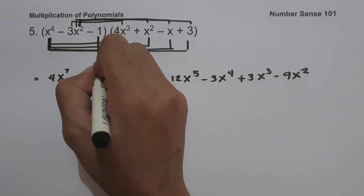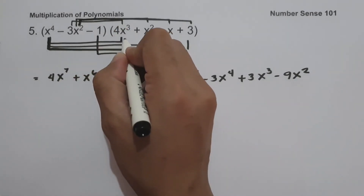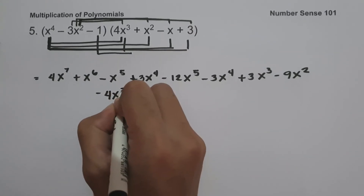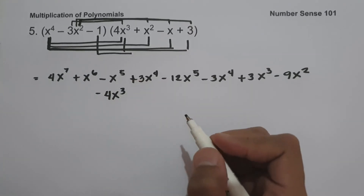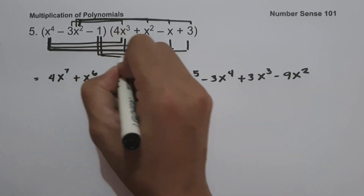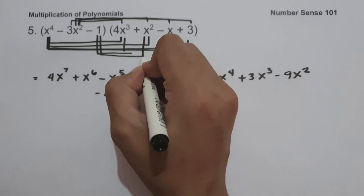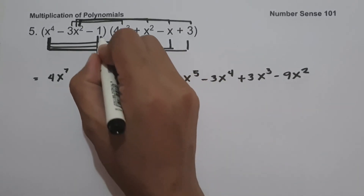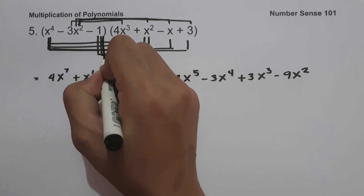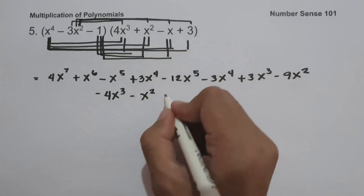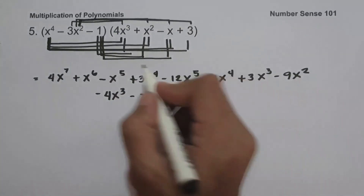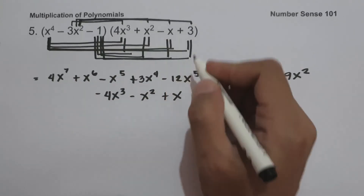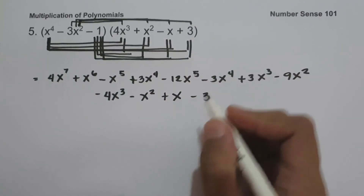Negative 1 multiplied by 4x cubed is negative 4x cubed. Negative 1 multiplied by x squared is negative x squared. Negative 1 multiplied by negative x is positive x. Negative 1 multiplied by 3 is negative 3.